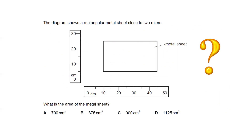Next question: the diagram shows a rectangular metal sheet placed close to two rulers. What is the area of this metal sheet? Remember, area equals length multiplied by width.